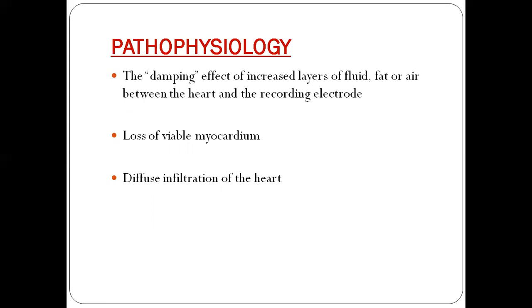When we place chest leads on the anterior part of the chest, if the distance between the heart and the chest wall is increased for any reason, that can lead to a low voltage ECG. This is due to a damping effect caused by various things accumulating between the myocardium and the chest wall — either fluid or a deposition of fat, as in the case of obesity. Fluid can include pericardial effusion or pleural effusion, which dampens the signals recorded by the ECG electrodes.